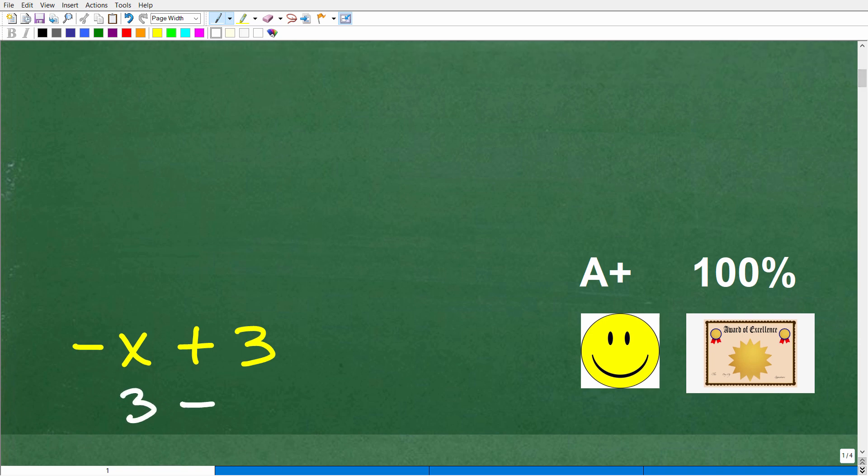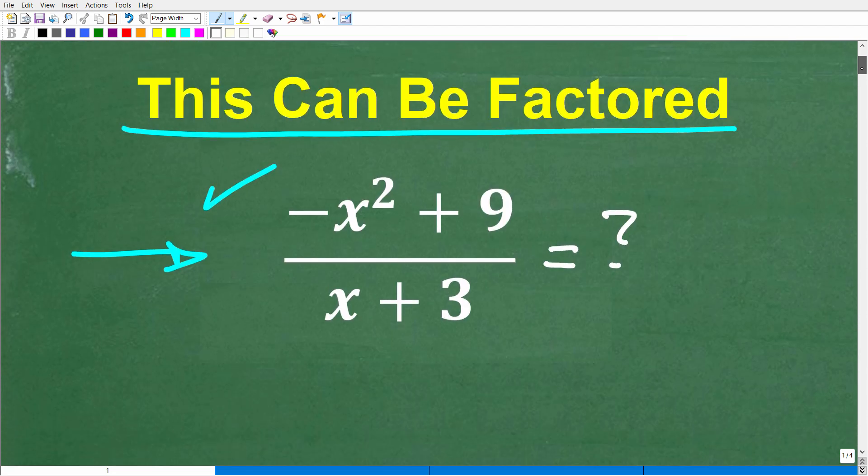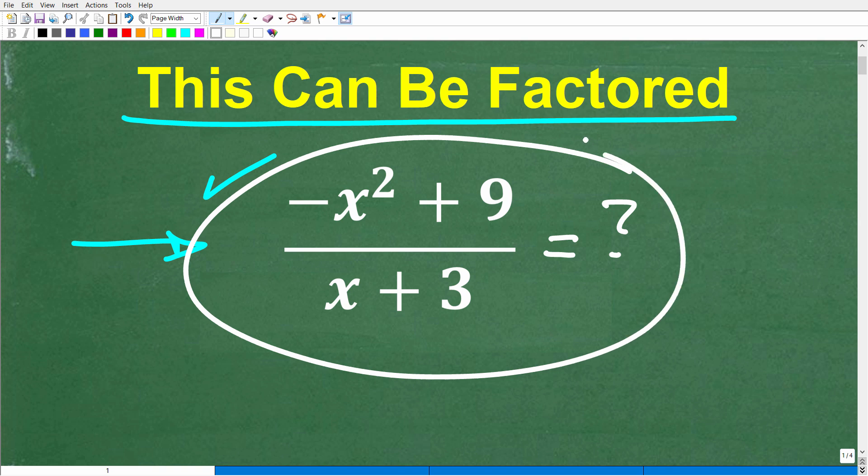The correct answer is negative x plus 3. We could also write this as 3 minus x. Both expressions are correct. If you got this right, you definitely deserve a happy face and an A plus, a 100%, and a certificate of excellence for being a certified professional expert in the area of factoring polynomials.